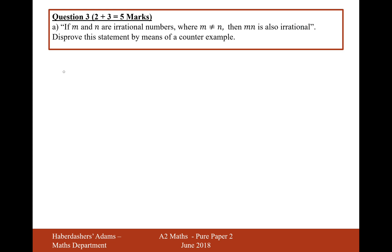What we want to do is we want to say that M is equal to and N is equal to such that when we multiply the two together, it is a rational number, and that will disprove this theorem.